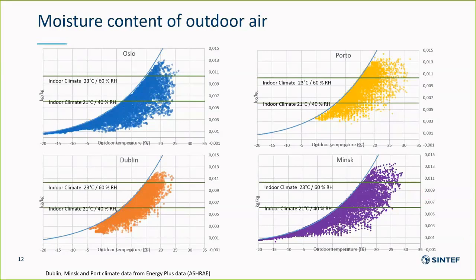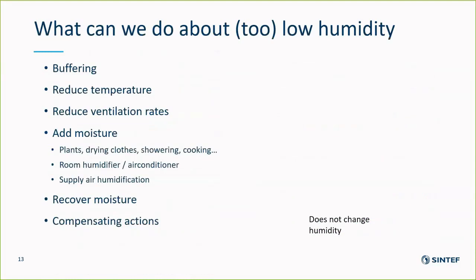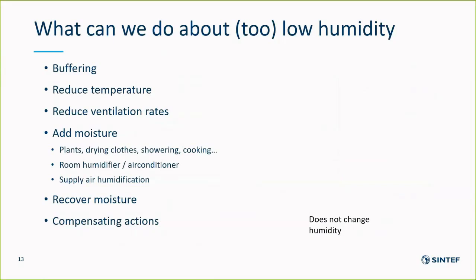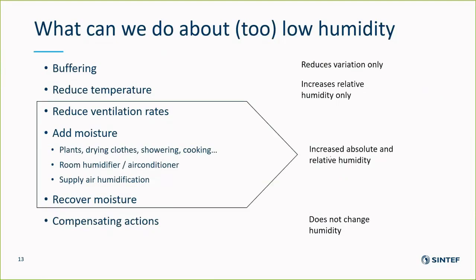So what to do about it? We could do buffering, reduce temperature, reduce ventilation rates and add moisture, try to recover moisture, or just try to compensate for the bad parts. Of course buffering will only reduce the variation, reducing temperature will increase only the relative humidity, while the next steps will increase both absolute and relative humidity.